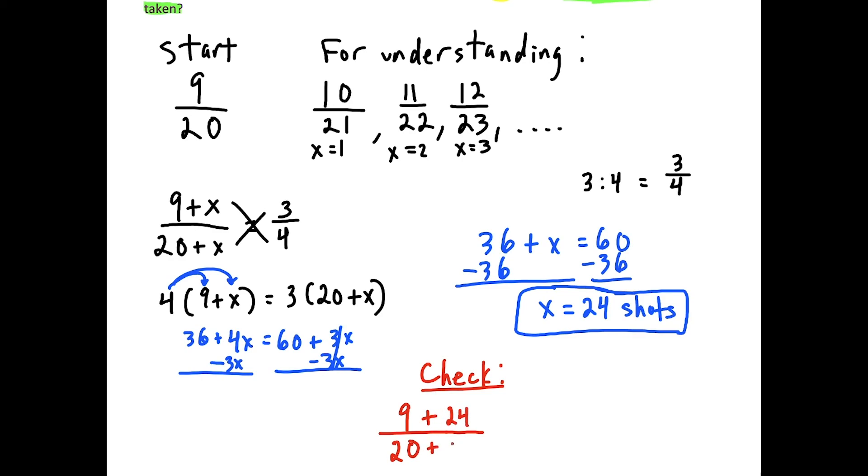But now he took 20 plus 24 total shots. So he took 44 shots in total. So that's 33 in the numerator, and 44 in the denominator. And if you reduce this fraction, dividing the top and bottom by 11, you're going to wind up with 3 out of 4, which matches the ratio that we were told that he ends with a record of 3 to 4. So x equals 24 shots does in fact check out, and it's our solution to the last question.